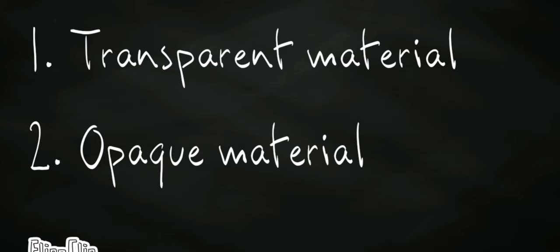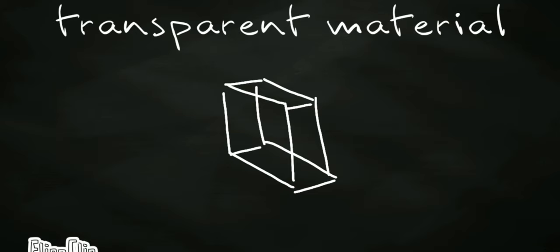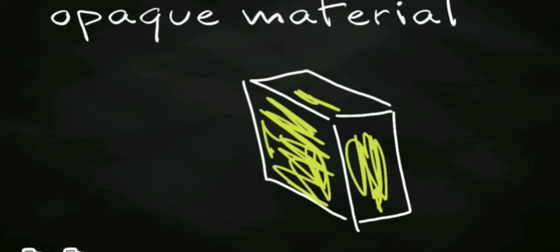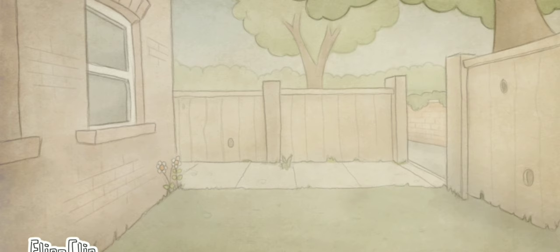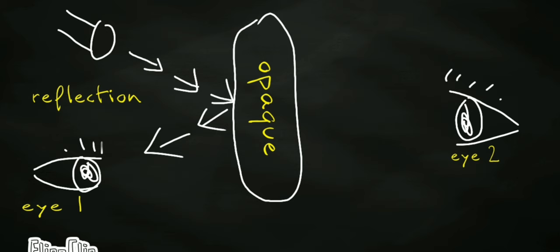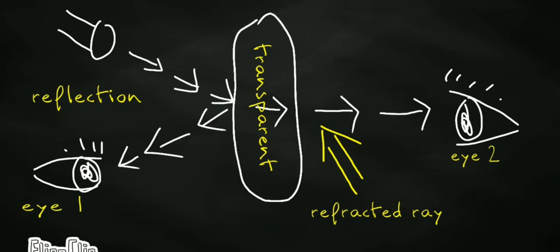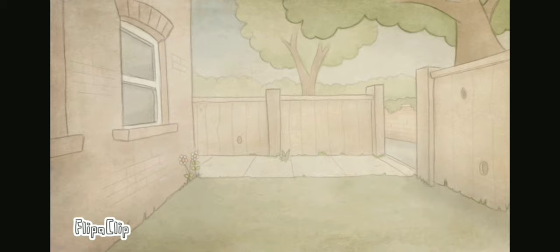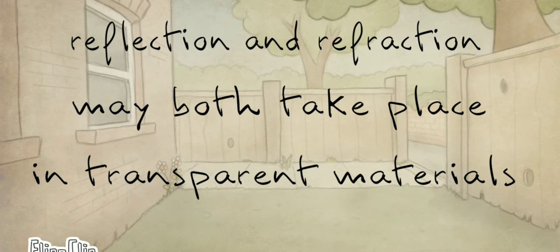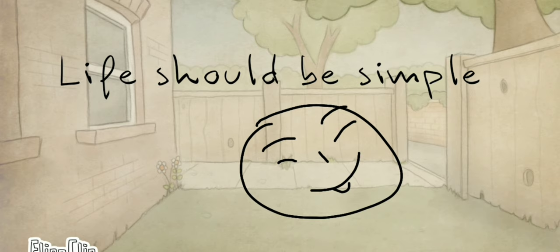One important thing I mentioned is transparent material and opaque material. Transparent material allows light to easily pass through. When I use light on glass or water, it can easily pass to the other side. Opaque material is the opposite — like a table or chair — light cannot pass through. Reflection is mostly observed in opaque materials. Transparent materials show refraction. It's a bit complicated, so we are going to study reflection of opaque materials.